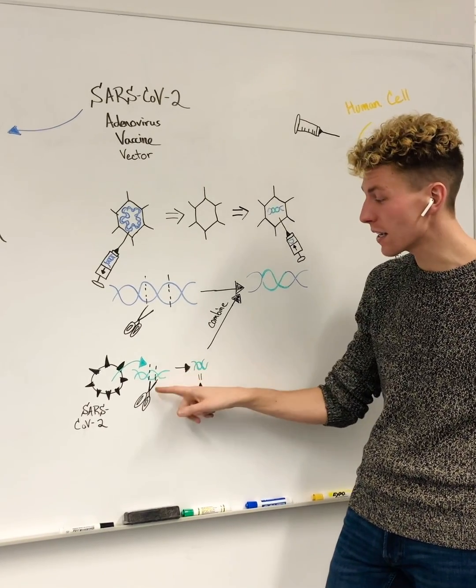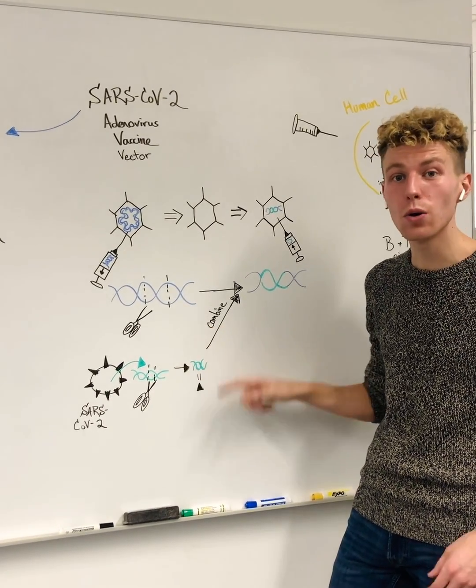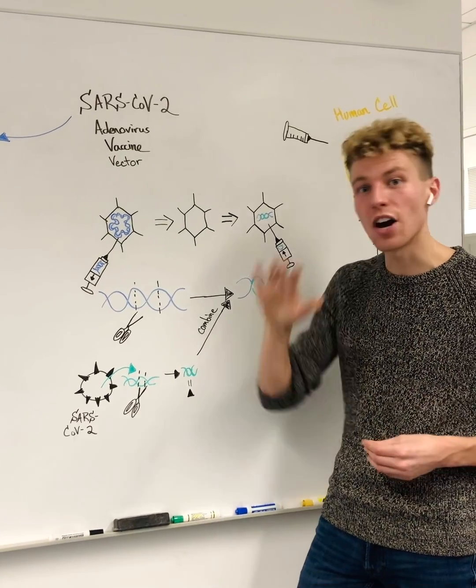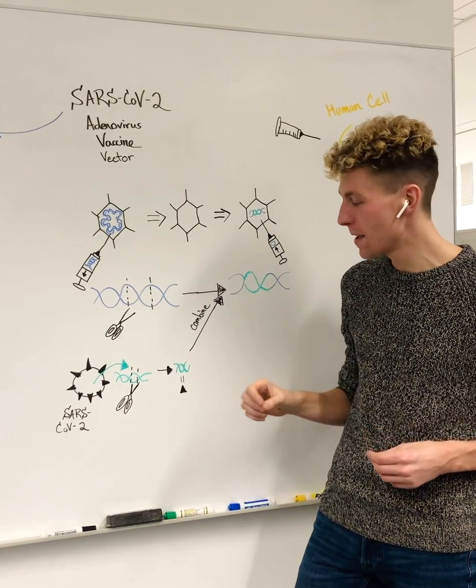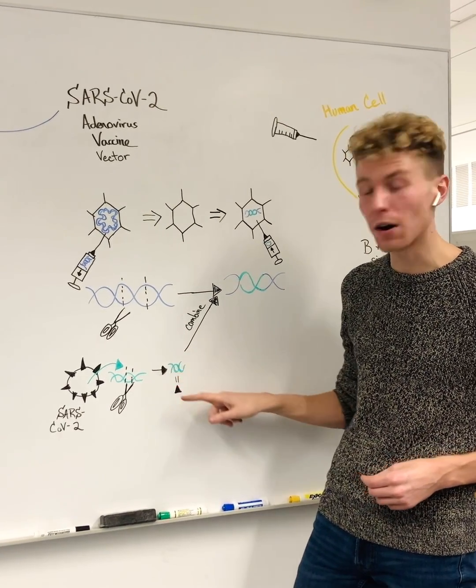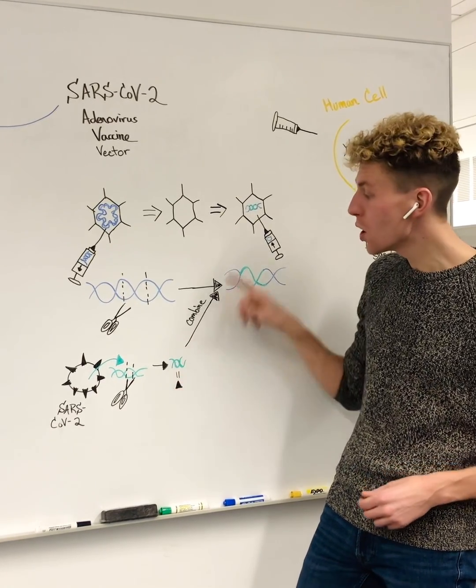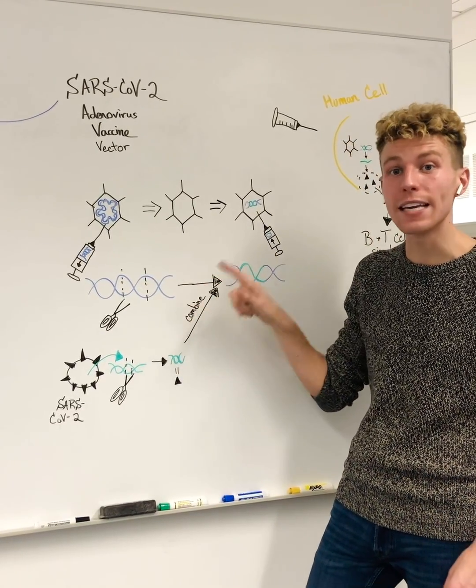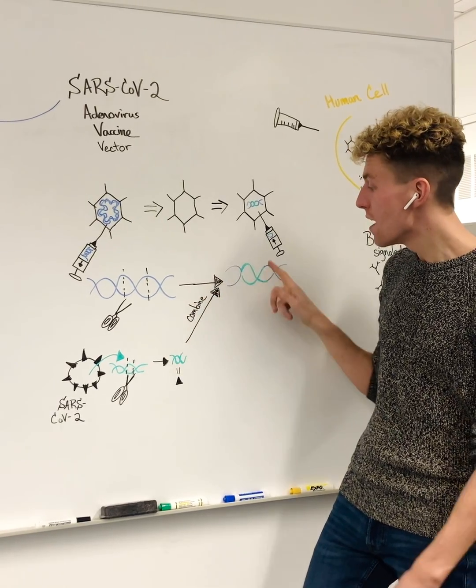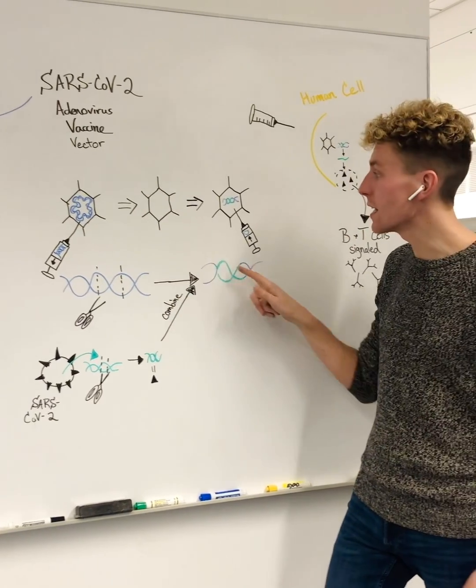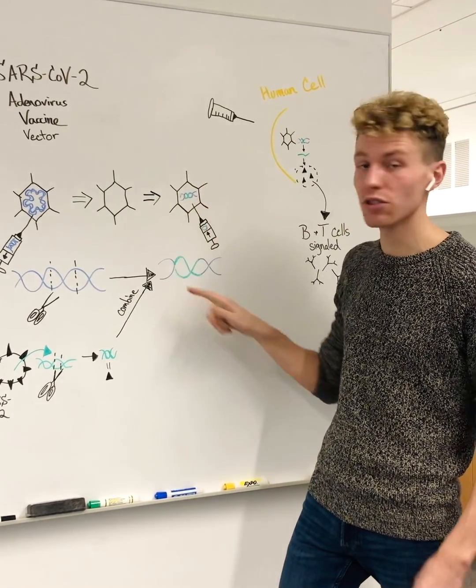Specifically, they cut out a single part of the DNA that encodes the spike protein on the outside of the virus. They then combine that spike protein DNA from SARS-CoV-2 with the remaining Adenovirus DNA. This modified DNA is then inserted back into the viral shell.